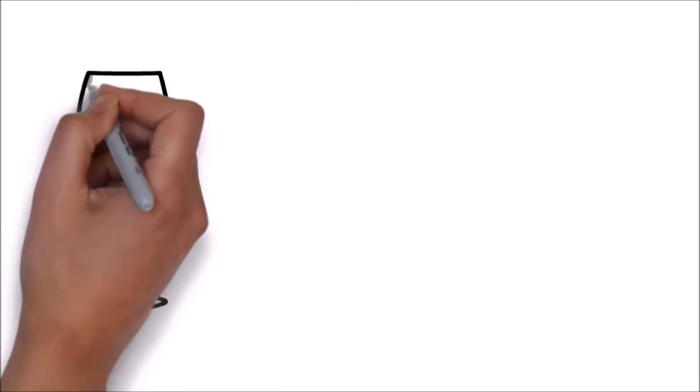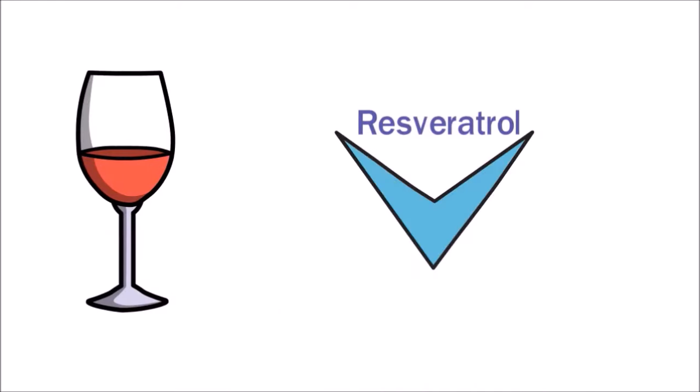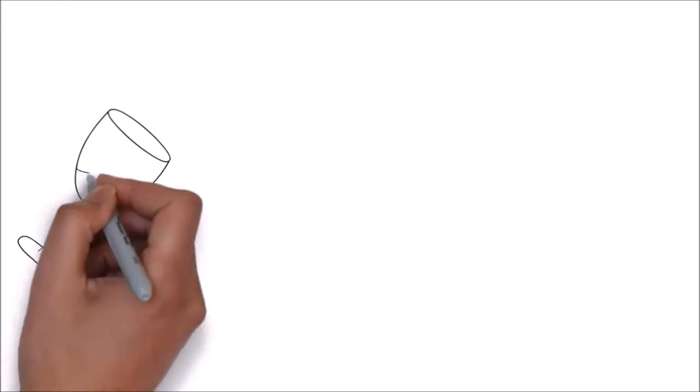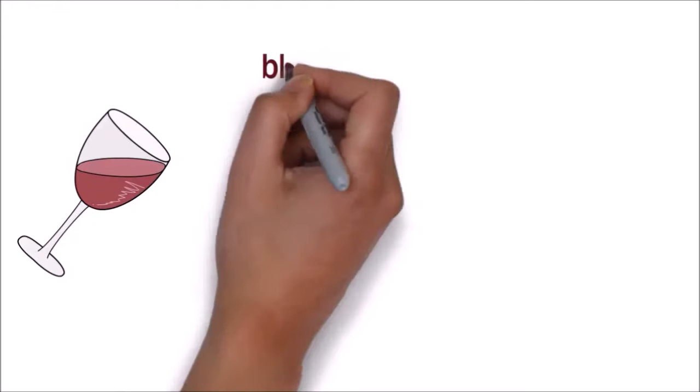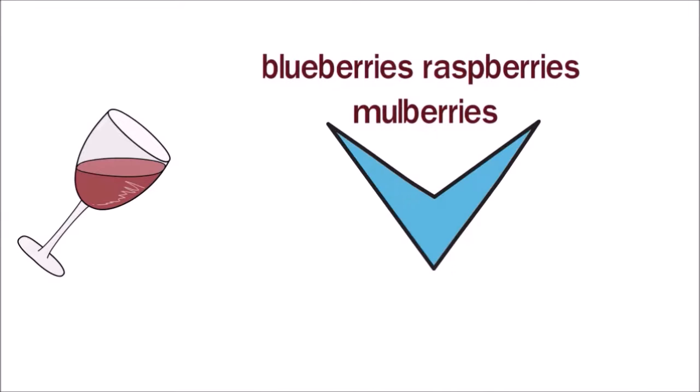Number 1: Red wine. Red wine contains an ingredient called resveratrol, which can come in the way of iron absorption. It's not just red wine. You should also avoid berries like blueberries, raspberries, and mulberries, since they also contain resveratrol.